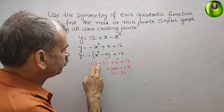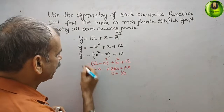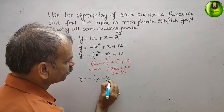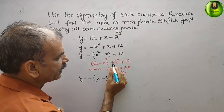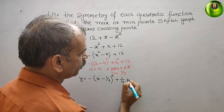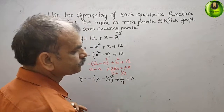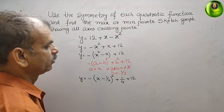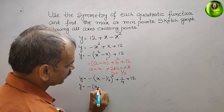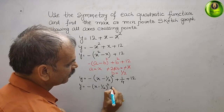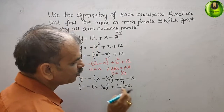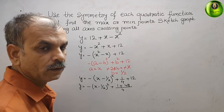Substituting this value into our formula, we get y is equal to minus of x minus 1 by 2 whole square, then plus 1 by 4, plus 12. Simplifying the constants: 1 by 4 plus 12 gives 1 plus 48 over 4, which equals 49 by 4. So y equals minus of x minus 1 by 2 whole square plus 49 by 4.